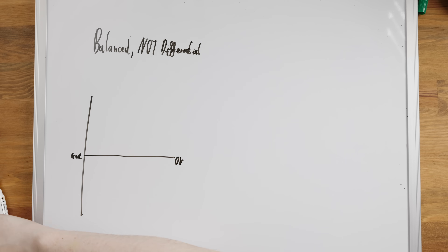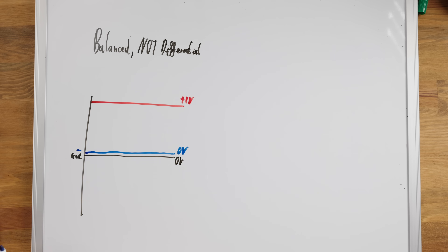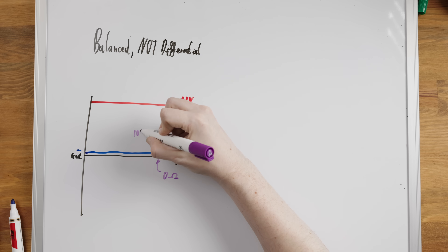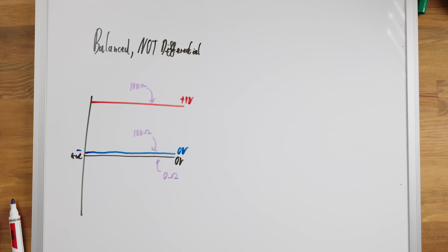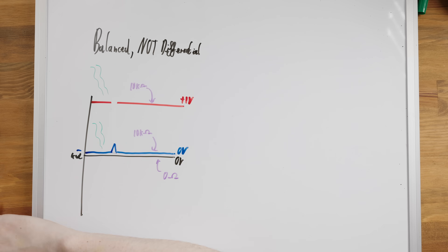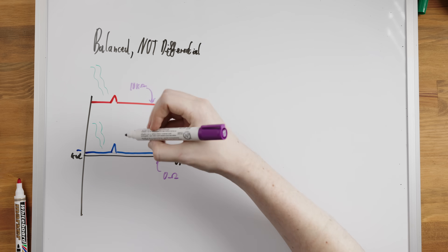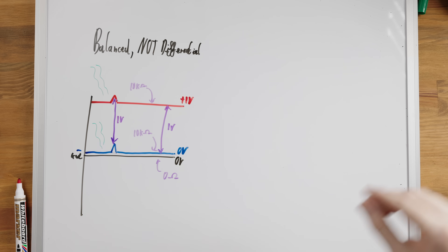You can have a balanced system without it being differential. The negative connection on this XLR output is not doing anything — it's not carrying a signal at all and it's actually at the same zero volts as the ground pin. Both the positive and the negative have equal impedances to ground though, so we still get the noise rejection benefits of balanced, though it is not a differential system.